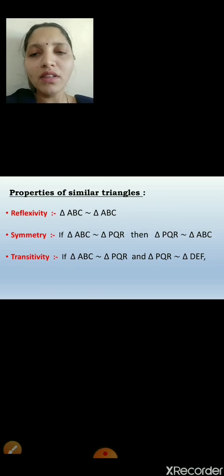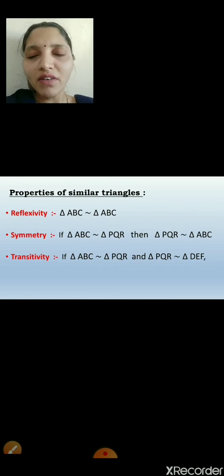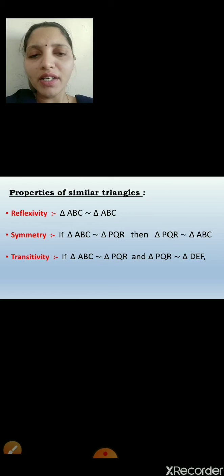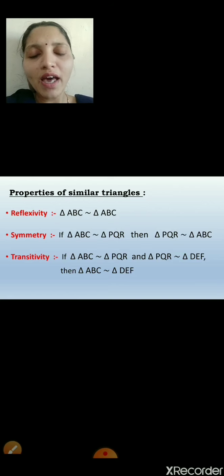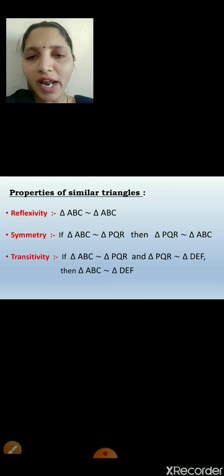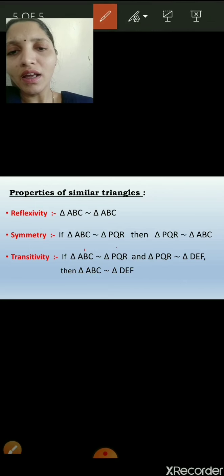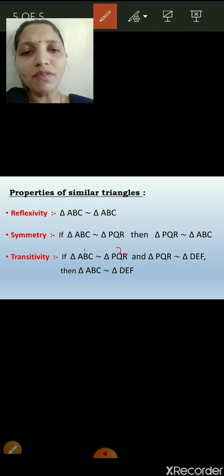The third property of similar triangles is transitivity. If triangle ABC is similar to triangle PQR, and triangle PQR is similar to triangle DEF, then we can say that triangle ABC is similar to triangle DEF.